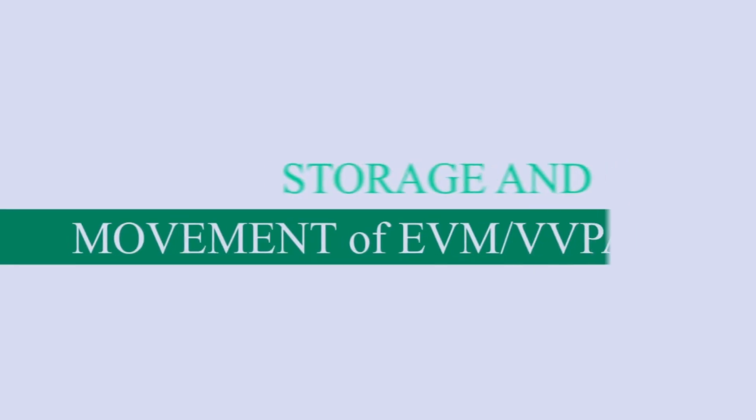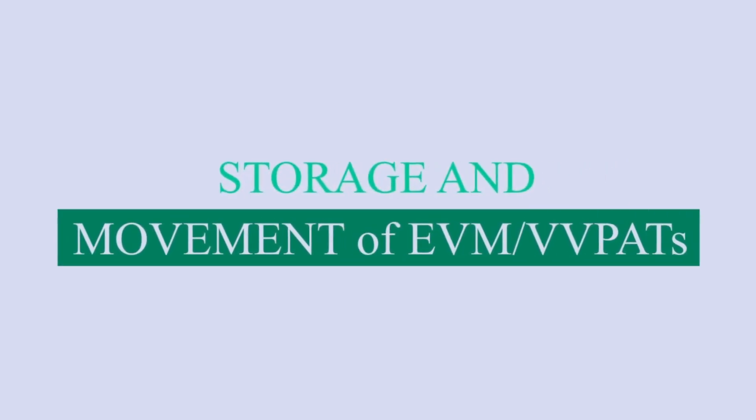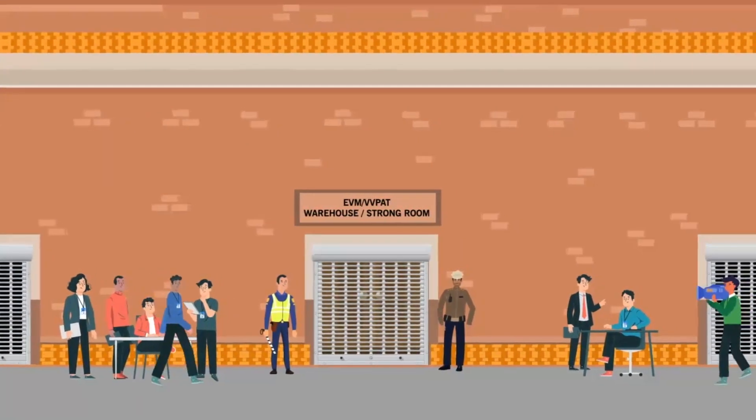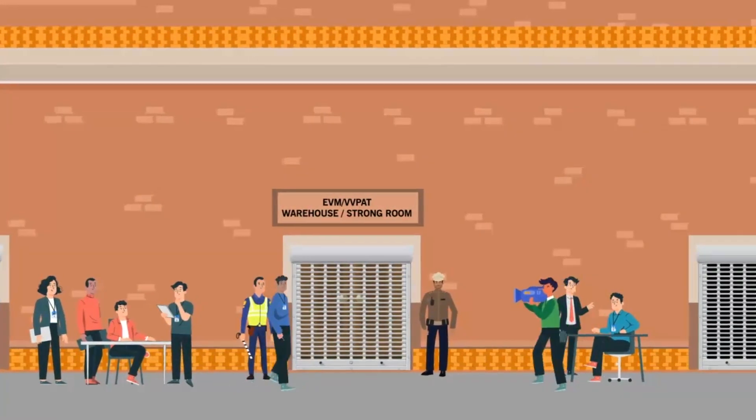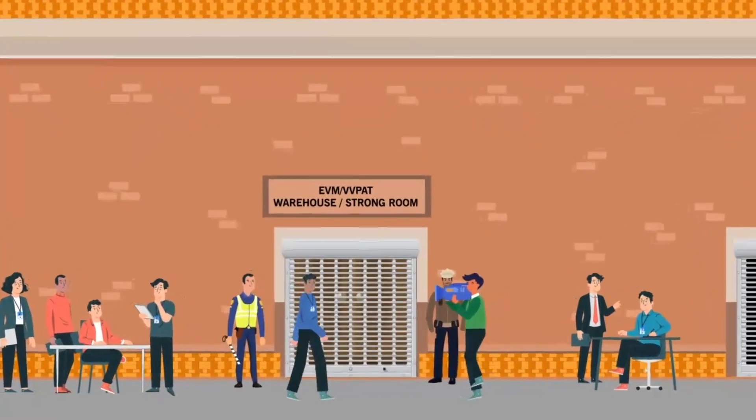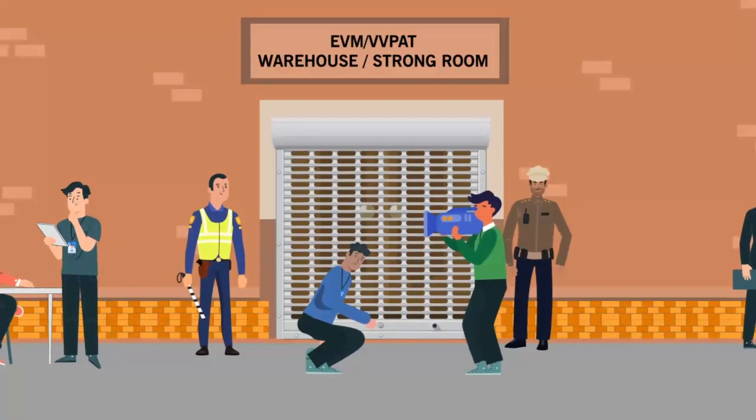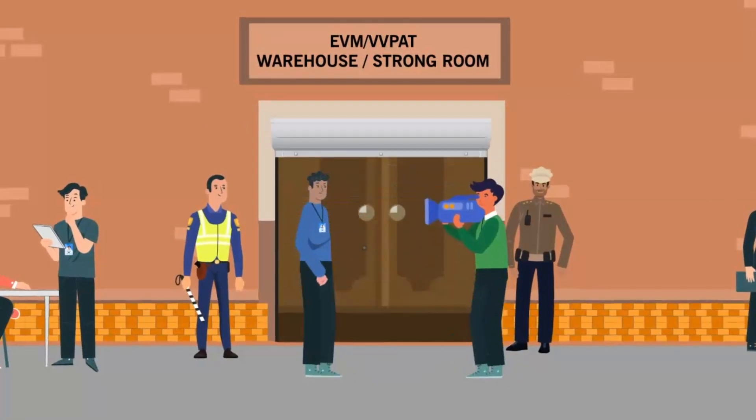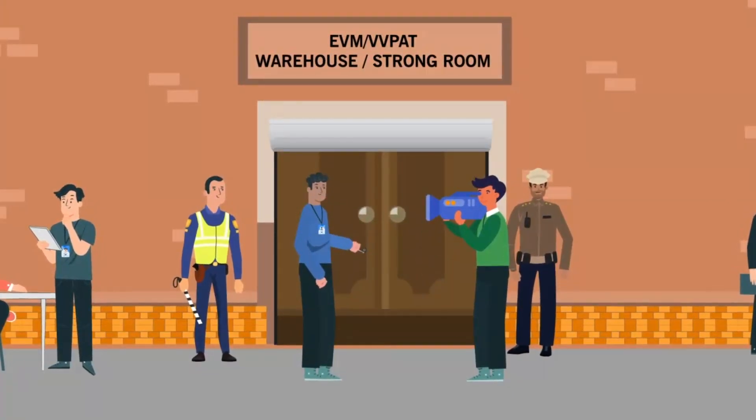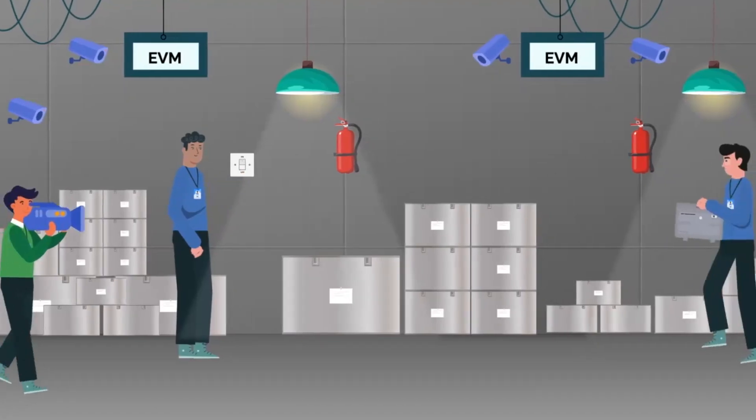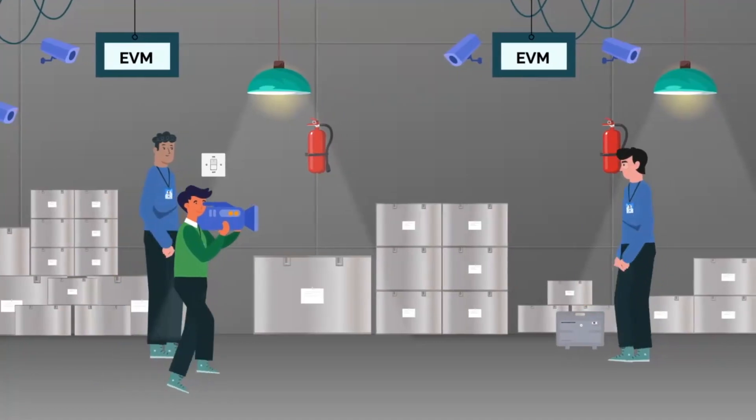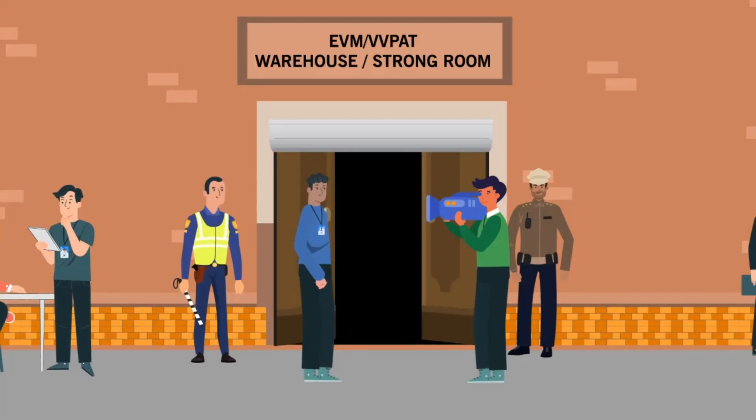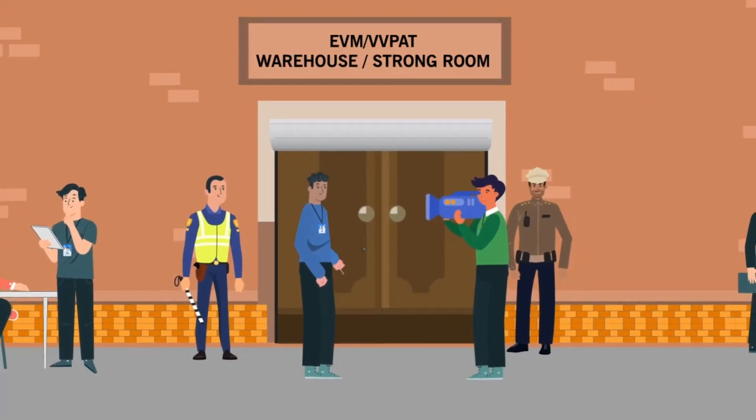Storage and movement of EVM and VVPAT: Don't open and close EVM warehouse without intimation and participation of representatives of national and state recognized political parties and approval of court concerned having EVM and VVPAT pertaining to election petition. Don't mix EVM and VVPAT with units of other election management bodies, and remember videography of opening and closing of warehouse and strong room.